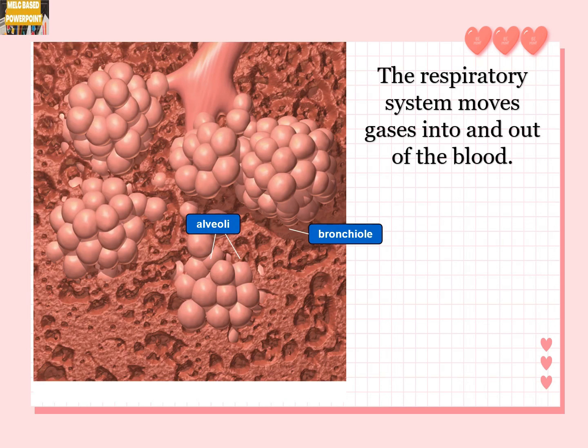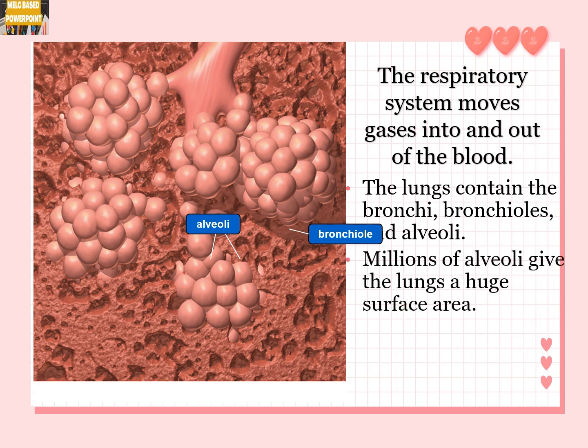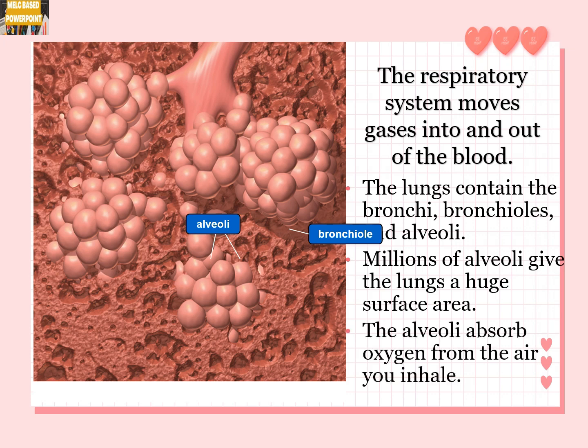The respiratory system moves gases into and out of the blood. The lungs contain the bronchi and alveoli. As you can see in the picture, that's how the alveoli and bronchi look like. Millions of alveoli give the lungs a huge surface area. The alveoli absorb oxygen from the air you inhale.